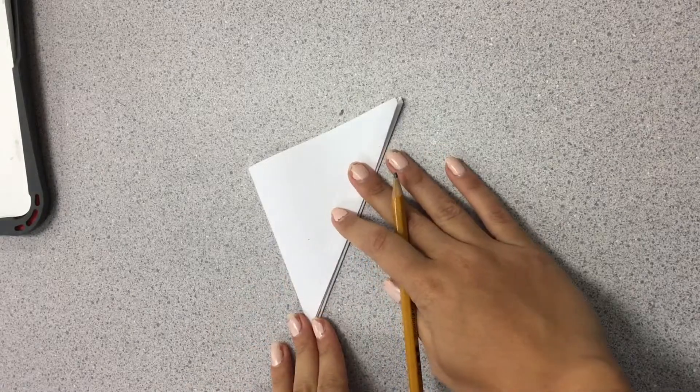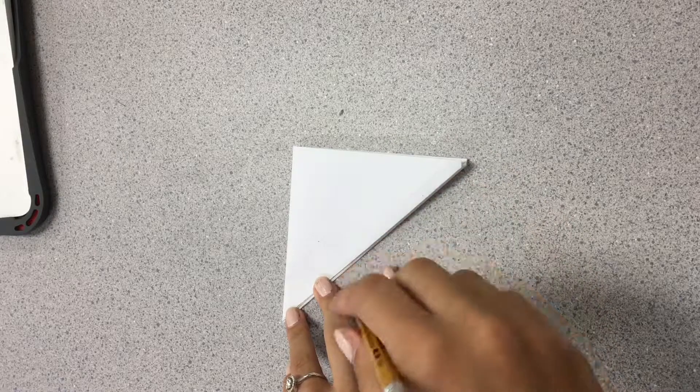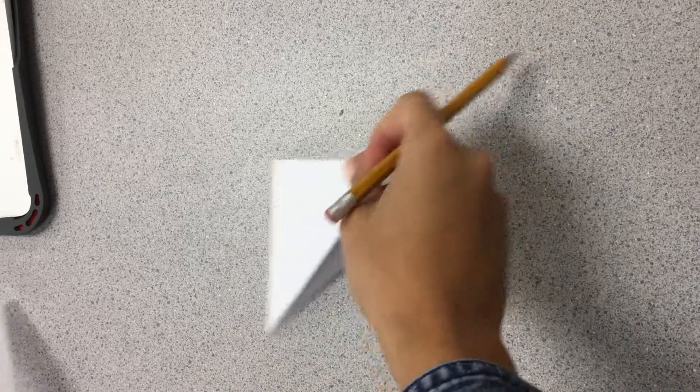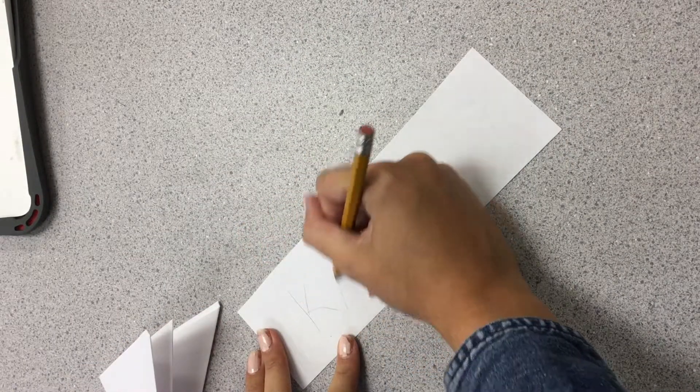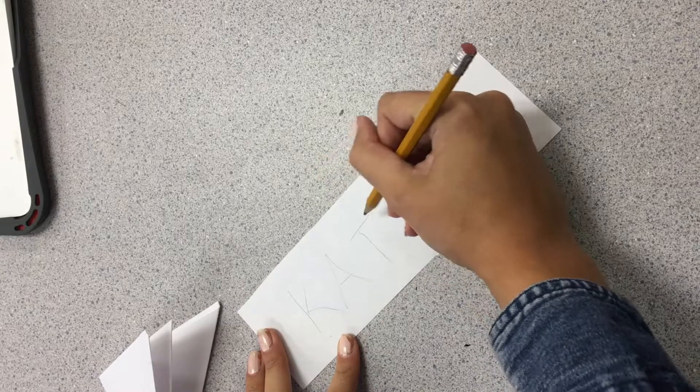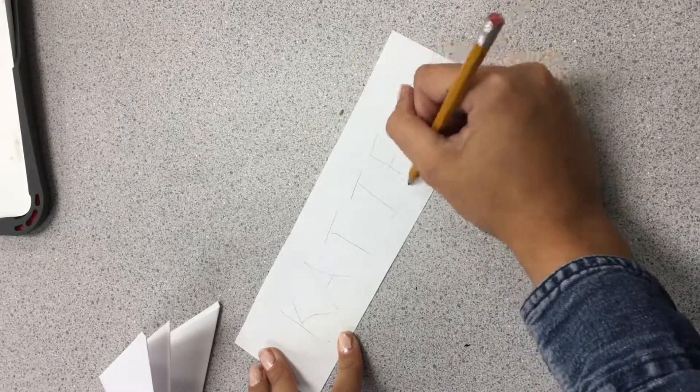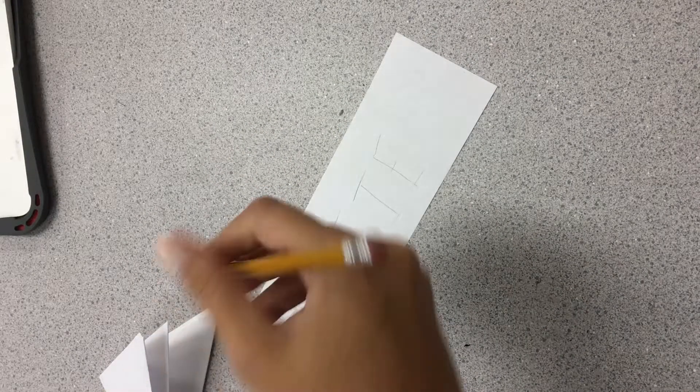Once you get to this step, it's time to practice writing your name. You're going to want to do it in bubble letters. If you need help with bubble letters, I can help you. But remember how I taught you that you can write your name in all caps, and then trace around it to write in bubble letters, and erase the inside.